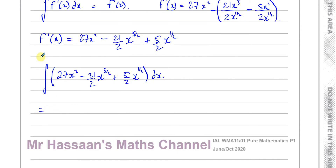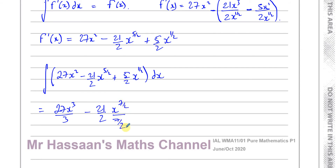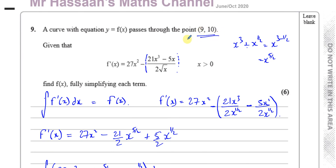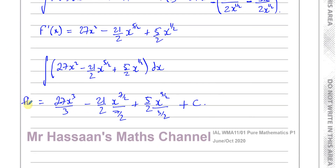To integrate, add 1 to the power and divide by the new power. So it's 27x³/3 minus (21/2) · x^(7/2) / (7/2) — since 5/2 + 1 = 7/2 — plus (5/2) · x^(3/2) / (3/2) — since 1/2 + 1 = 3/2 — plus c. Don't forget your plus c; this is an indefinite integral and we'll find c using the point the function passes through.